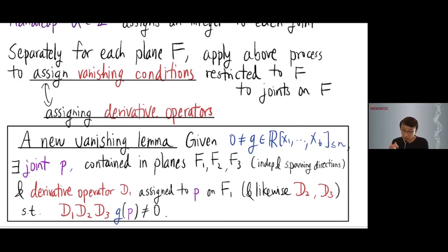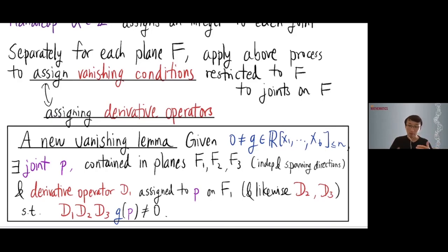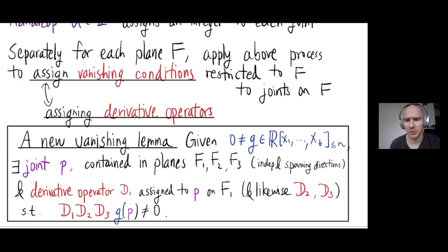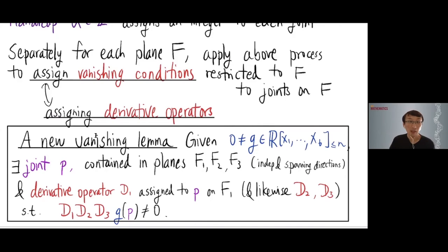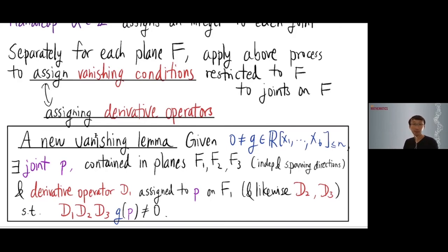The handicap assignment is done once and for all for all joints — that is essential for this vanishing lemma to work. The process is run independently on each plane, but uses the same joint handicap values throughout.